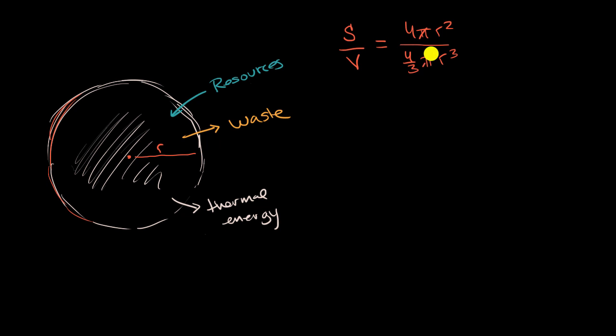So this π would cancel with that π. If we divide the numerator and the denominator by r², we get a one there, and then we just get an r right over here. If we divide both of these by four, you get a one there, and this is just going to be a one-third. And so we are going to be left with one over one-third r, or we could just write this as this is equal to 3/r.